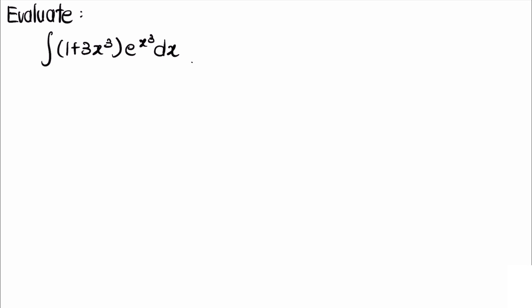Let's integrate the function (1 + 3x³)eˣ³ with respect to x. The reason why it's nice is that it's actually the sum of non-elementary integrals — e to the x³ and 3x³ times e to the x³ — but as you will see, this integral is actually elementary and can be expressed in closed form. There are two ways to look at this problem, and either way is implicitly the same.